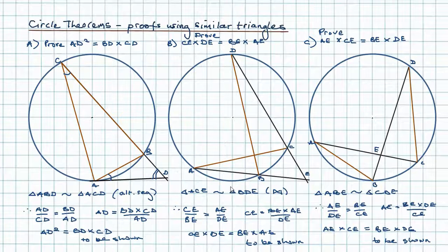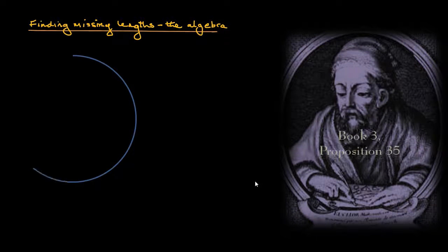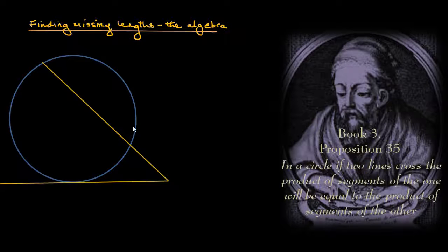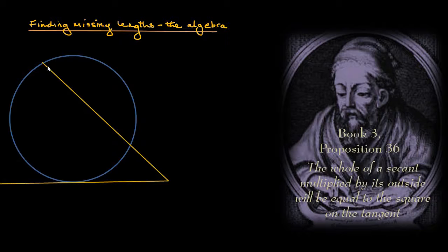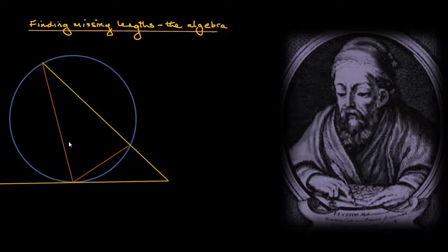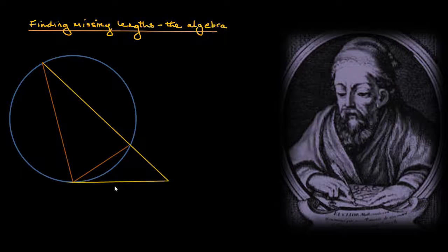For part B of this video, I want to show not only how these theorems can be proved but also how useful they are to learn, simply because they often turn into algebraic problems. We're going to find missing lengths and extend these geometric ideas into algebra. It can sometimes be difficult to see what you're dealing with — don't forget to look for the tangent and the secant, and then you'll realise there's a tangent-secant relationship.